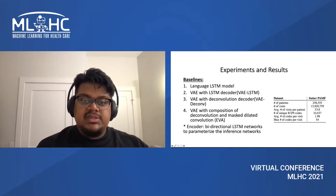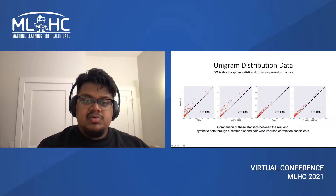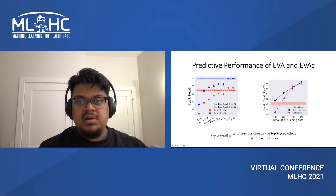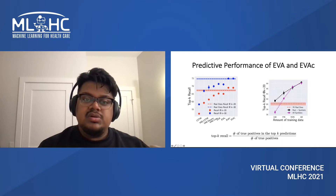We perform extensive experiments on different baselines on a large dataset containing over 250,000 patients. First, we show that EVA is able to outperform the baselines by capturing a similar data distribution to the real EHR data. We also show that the predictive performance of EVA is improved when we combine the augmented synthetic data with the real data to train a predictive model.